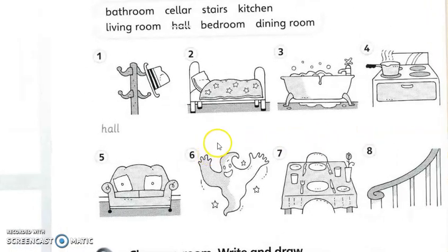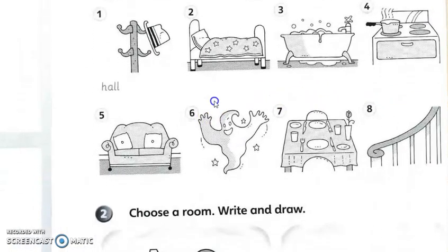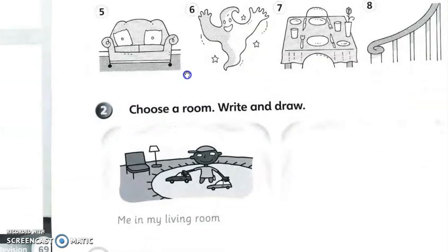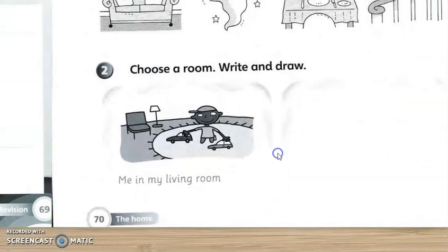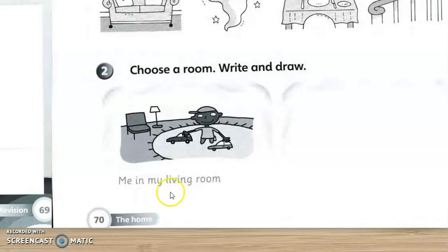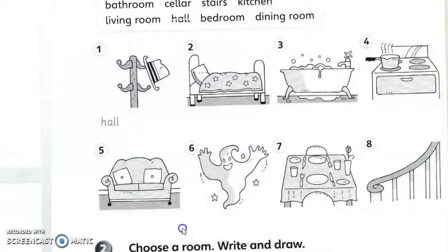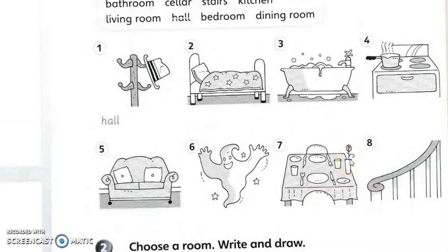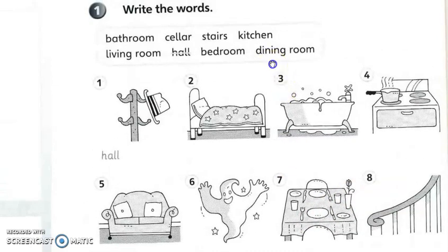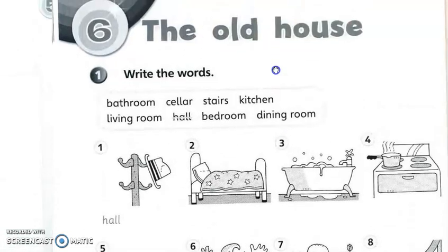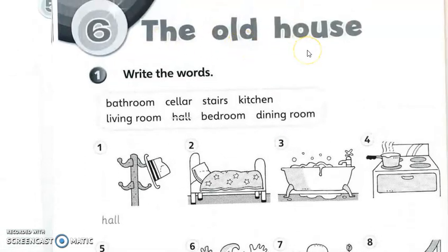We continue with our lesson, still using the Supermind workbook. For today, we are going to learn about the home, page 70. You can refer to your books or record this video. We have a new topic: The Old House.